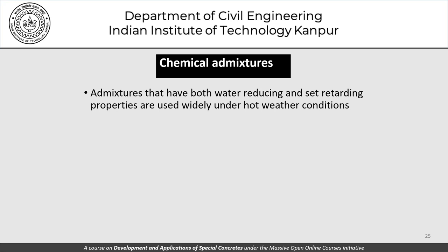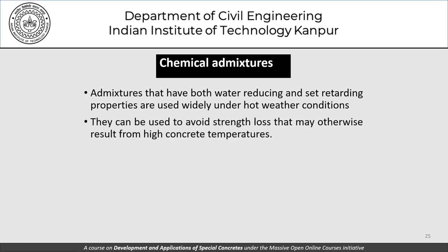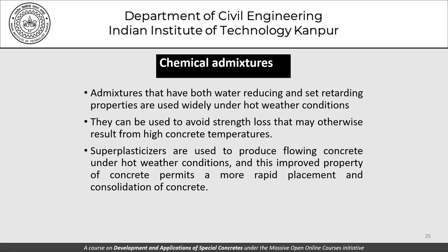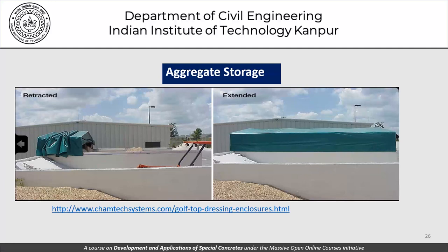Chemical admixtures with both water-reducing and set-retarding properties are widely used under hot weather conditions to avoid strength loss resulting from high concrete temperatures. Superplasticizers are used to produce flowing concretes, permitting more rapid placement and consolidation. Aggregate gradation, particle shape, and so on should minimize water demand; blending of aggregates may be considered. Crushed coarse aggregates contribute to higher water demand but also provide better resistance to cracking. A retractable aggregate storage system can be used to control aggregate temperature in both hot and cold weather.